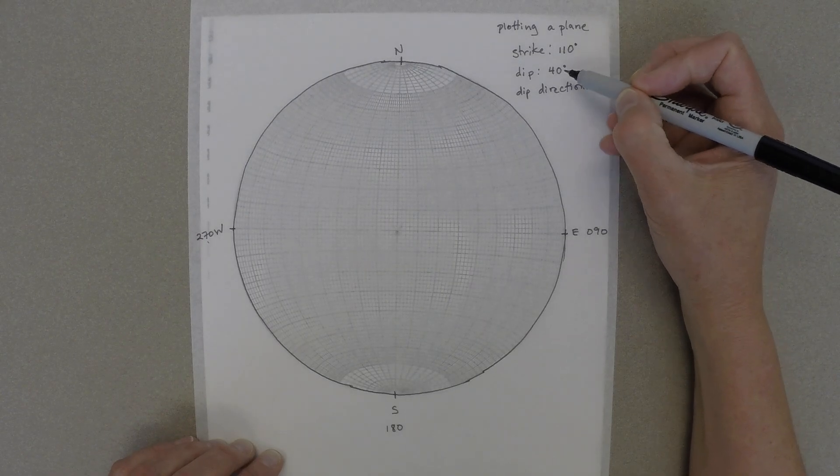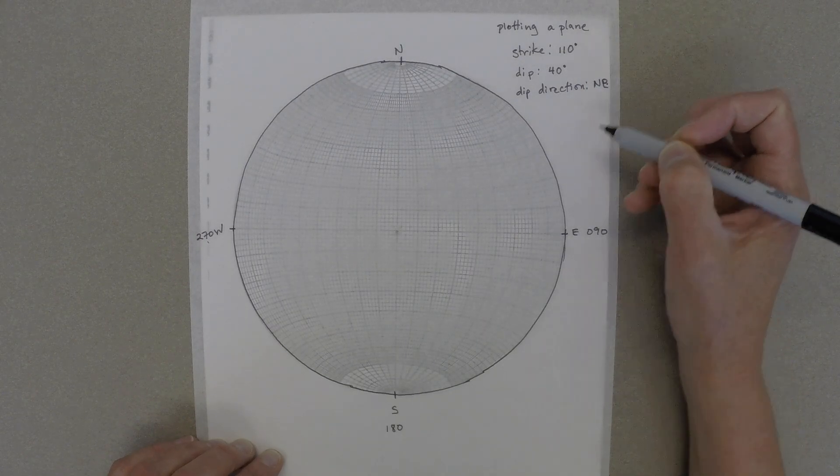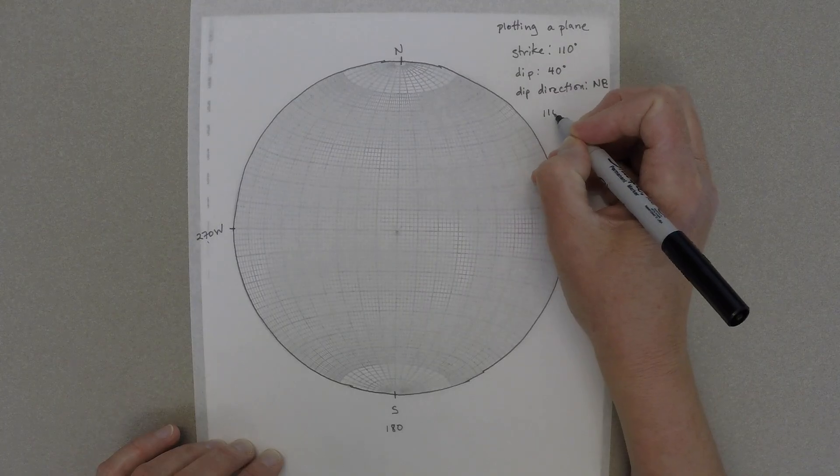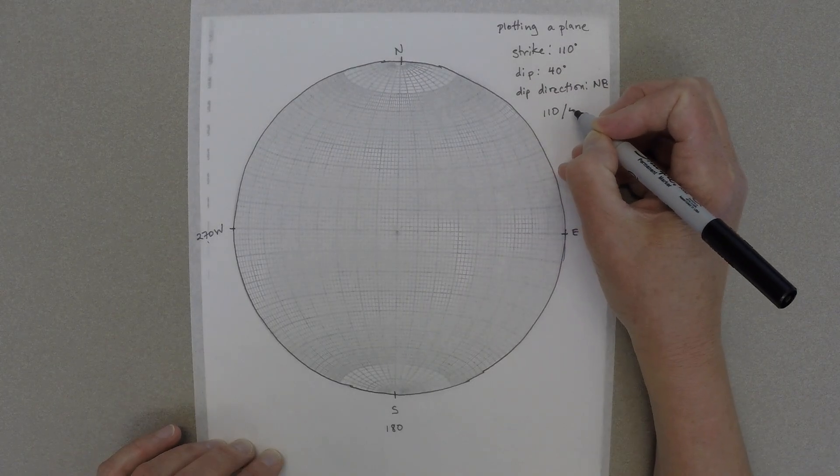We're going to plot a plane with a strike of 110 degrees, a dip of 40 degrees, and a dip direction of the northeast, sometimes written like this.